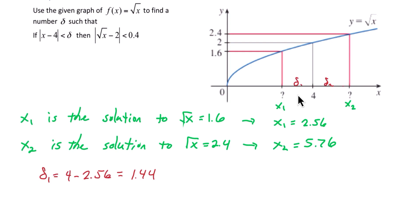Delta 2 is x2, which is 5.76, minus 4, that gives us 1.76. And delta is the smaller of those two values. So the delta that we're looking for is 1.44.